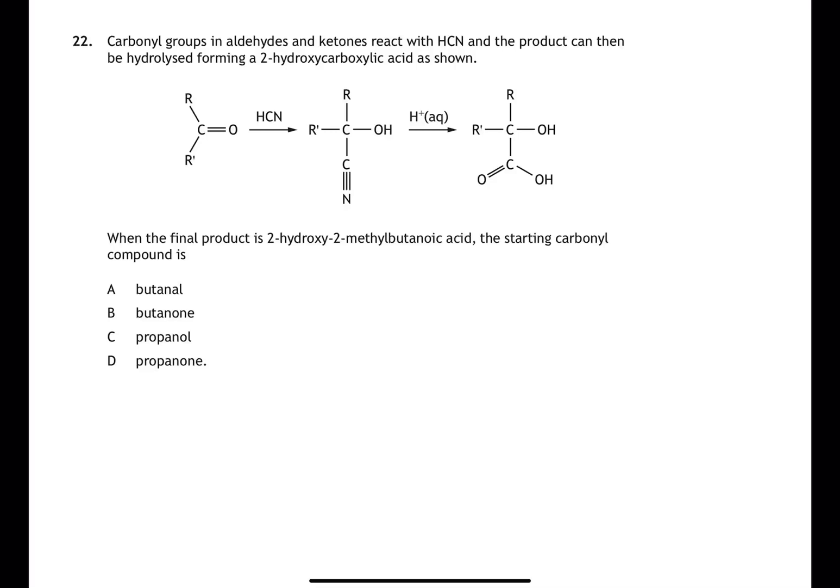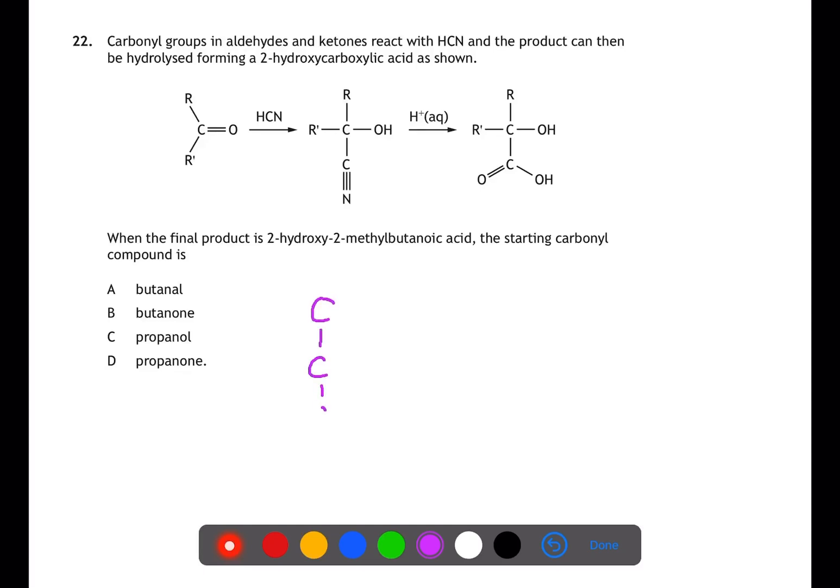For question 22, we are best starting with the final product and working our way back through the different stages of the reaction. We have 2-hydroxy-2-methylbutanoic acid. This means that running down the middle of the structure, we have four carbons, ending with the carboxyl group at the bottom to match up with the structure above.